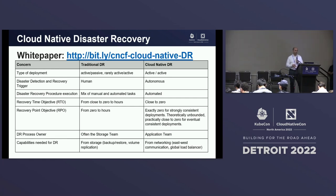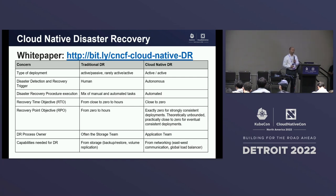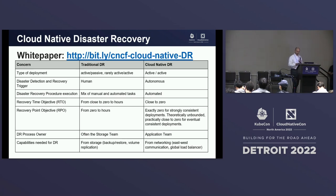In terms of capabilities, traditional DR uses storage-oriented capabilities like backup/restore or volume replication — synchronous or asynchronous. Cloud-native DR needs more network-oriented capabilities: the ability to communicate east-west between data centers, which is the path the smart middleware uses to sync transactions. We also need global load balancers smart enough to detect if an application is unavailable and automatically trigger the recovery procedure.